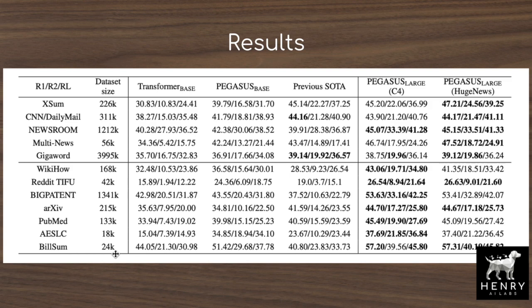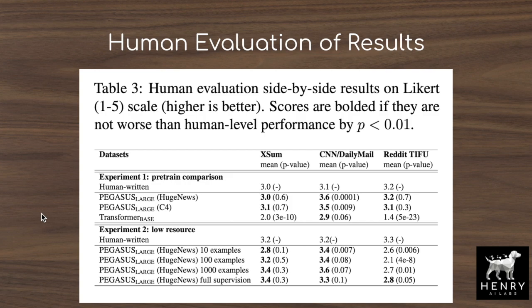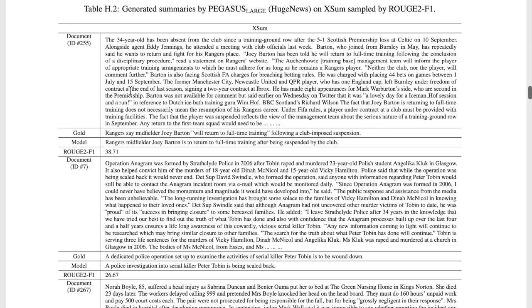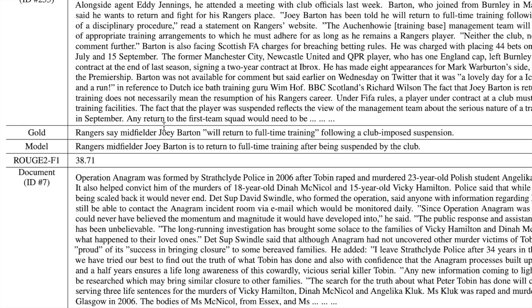Human evaluators comparing summaries written by humans and by Pegasus large on low-resource settings (10, 100, 1,000, and full supervision examples) show that Pegasus large writes better summaries than humans on XSum and CNN/Daily Mail, though not yet on Reddit TIFU. Example summaries are nearly indistinguishable—for instance, both the model and human describe 'Rangers midfielder Joey Barton returning to full-time training after a club-imposed suspension' in nearly identical language, making it like a Turing test.